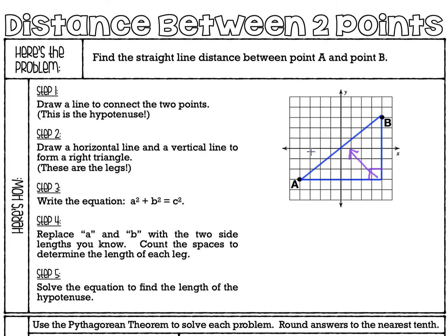Whenever you're trying to find the distance between two points on a graph and the line is not a horizontal or a vertical line, that's always going to be the hypotenuse of a right triangle that you are going to draw. We're going to start out with our formula: A squared plus B squared equals C squared.